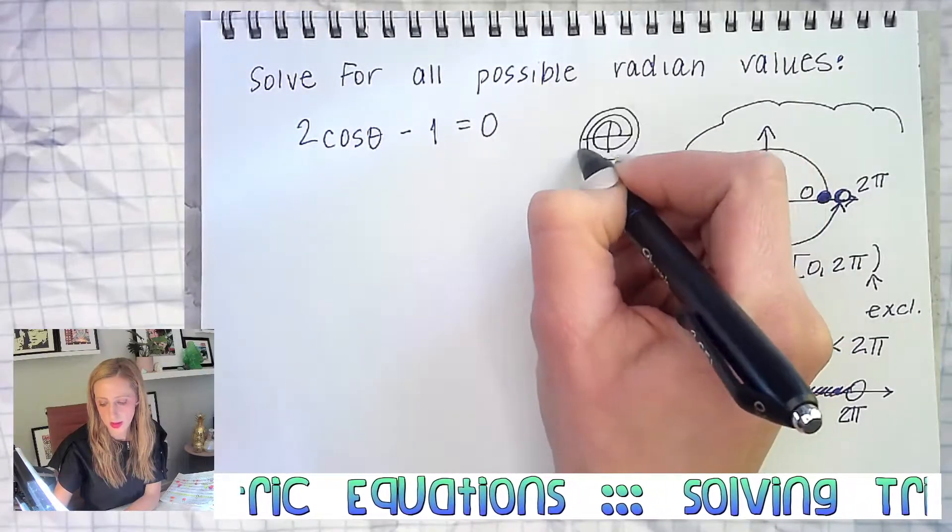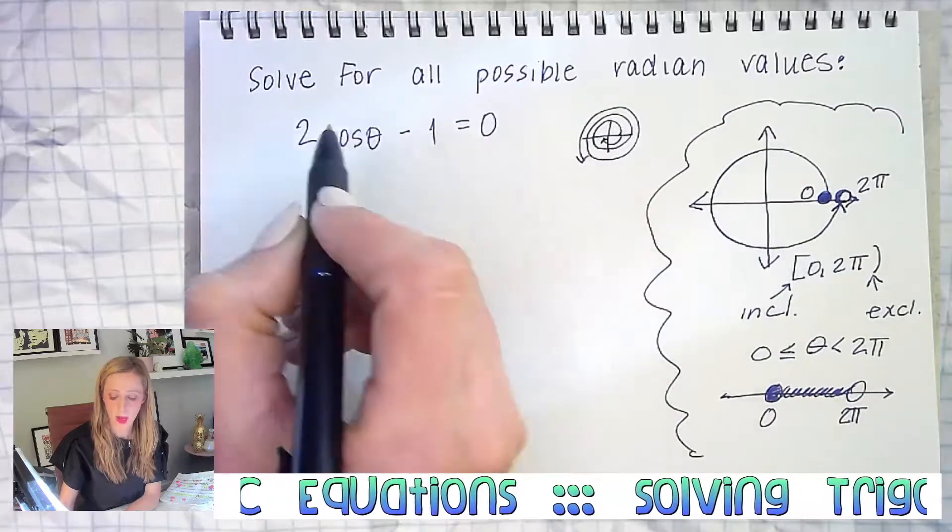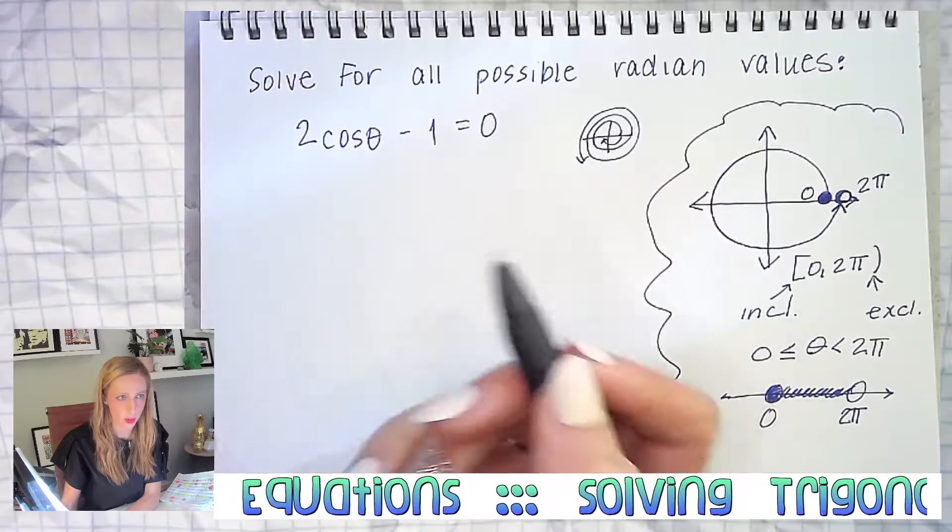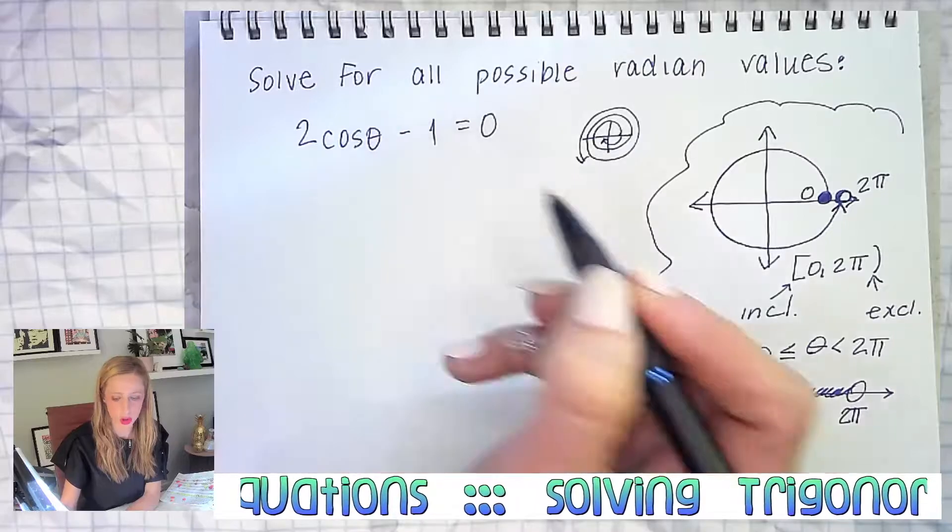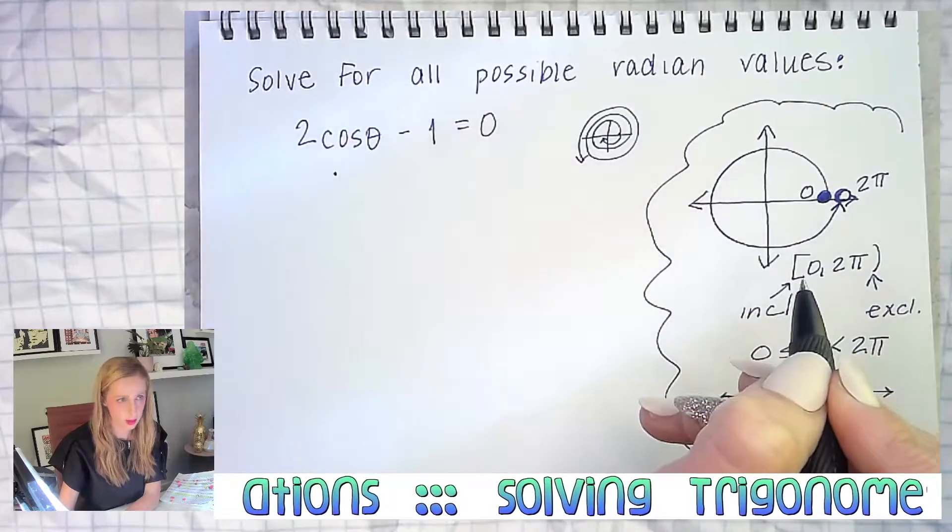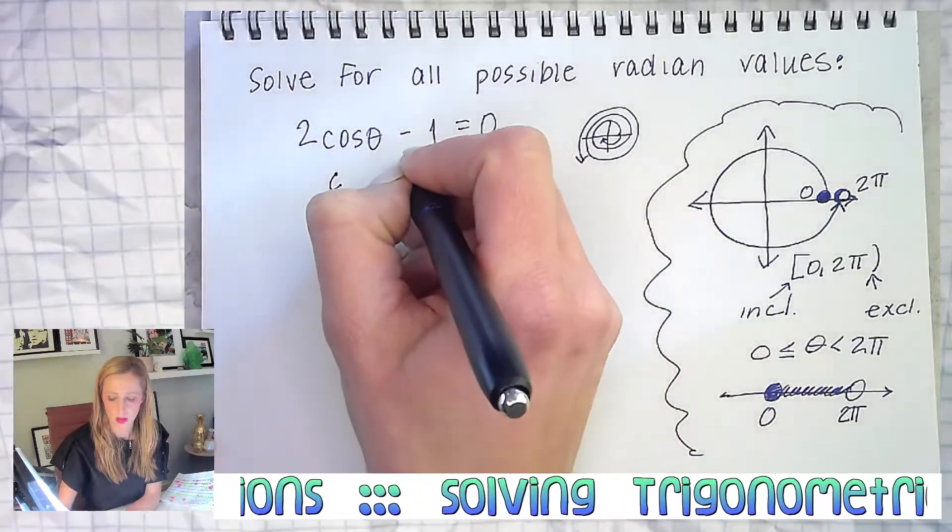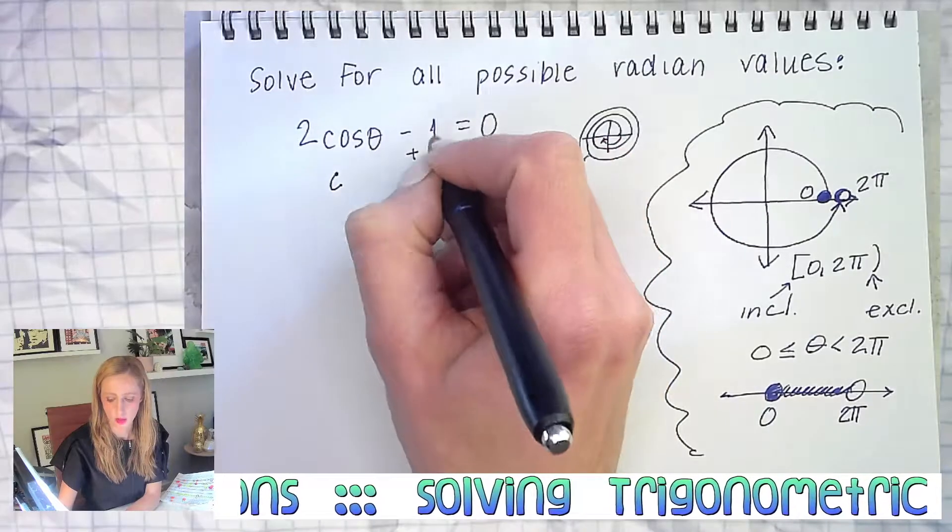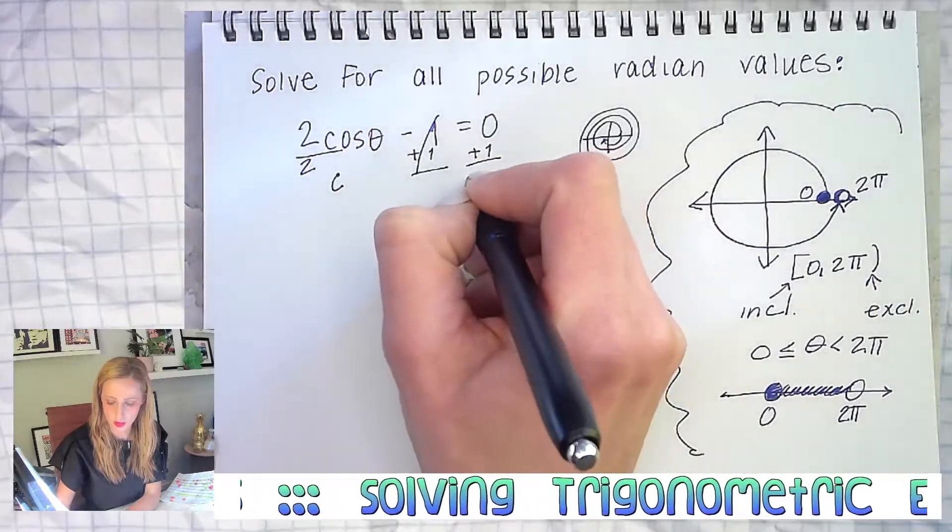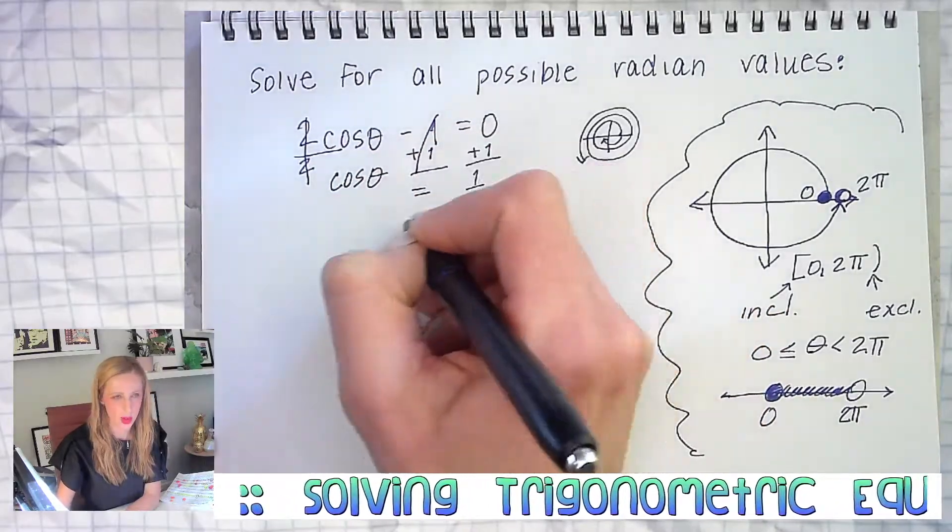But this example is not restricting us. Since this example is not restricting us, we can go around and around in this direction forever and we can also go around in the other direction forever. We'll start this the same way though. What would we do first? Add one to each side, and then after that, divide by two. So we end up with cosine theta equals one half.